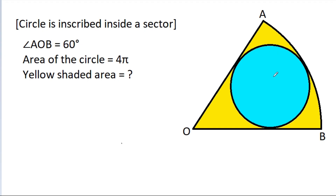In this video, we have been given a circle inscribed in a sector AOB, and angle AOB is 60 degrees, and the area of the circle is 4π. We have to find the yellow shaded area.